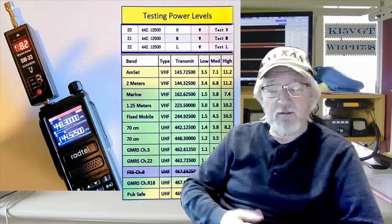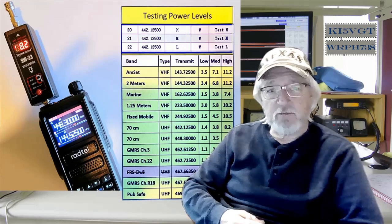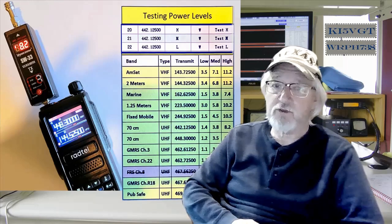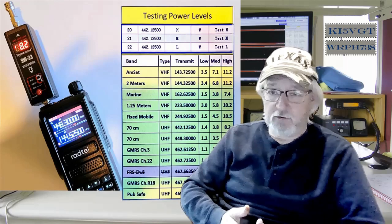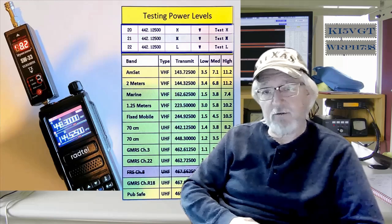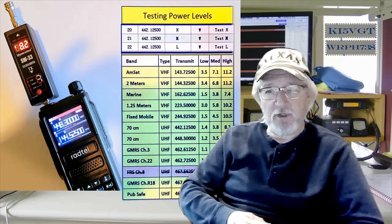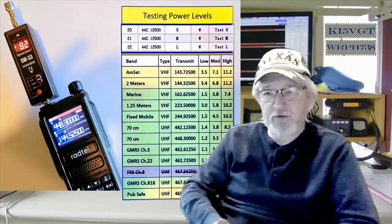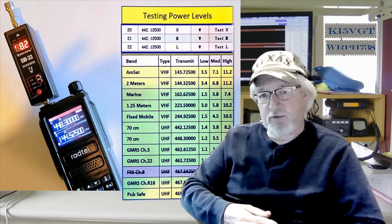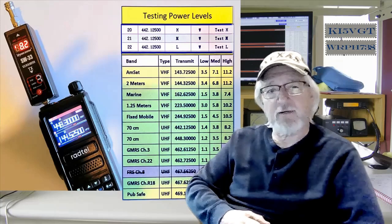So you can see in the chart to my left, I tested in the AMSAT band, the amateur satellite, 2 meters, marine, 1.25 meters, fixed mobile, 70 centimeters, GMRS (which includes the FRS), and then there are many of them that were public safety. I started filming while I was testing all of the 65 with a closeup of the radio. And so I thought, well, what you're really interested in is the results. And that's the chart you see on my left.